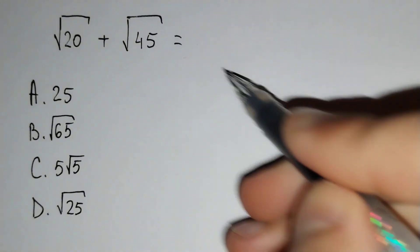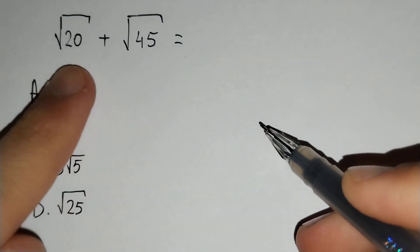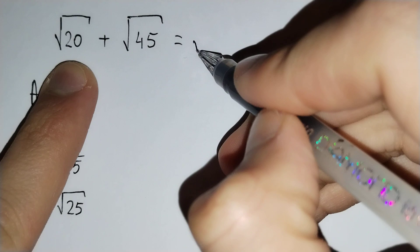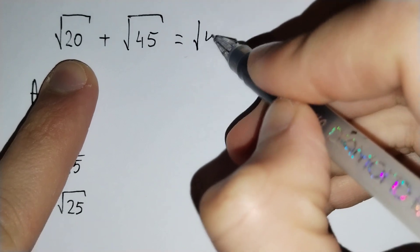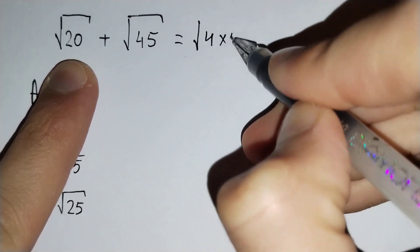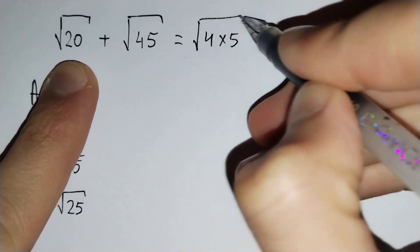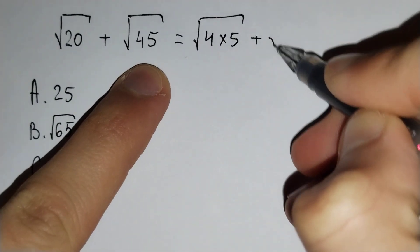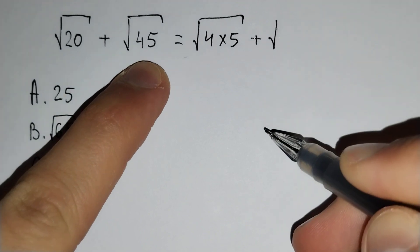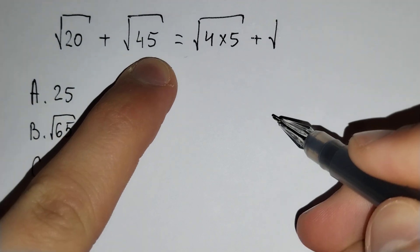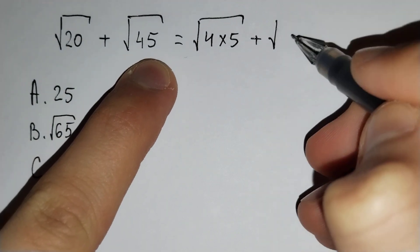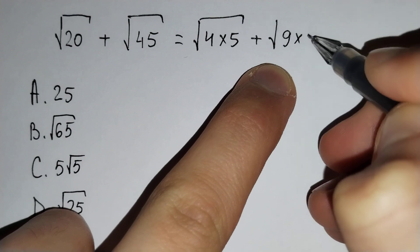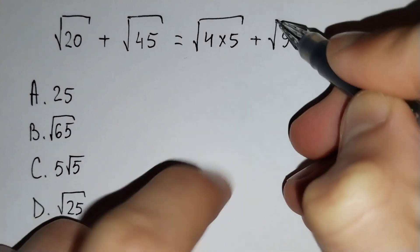Firstly, you know that the square root of 20 is equal to the square root of 4 times 5, plus the square root of 45 is equal to the square root of 9 times 5.